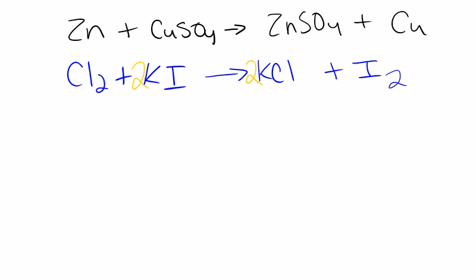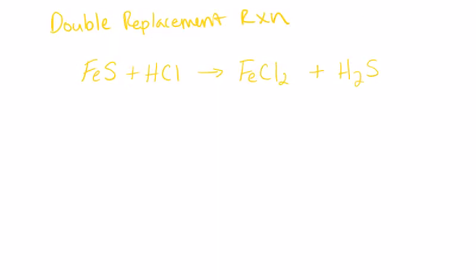Now we're going to move on to the double replacement reaction. A double replacement reaction and single replacement reaction are very similar, except in this case both cations and anions are being replaced — there's no free element. As you notice, in this equation there are 2 compounds as reactants. We recognize this as a double replacement equation because there are 2 compounds, and their products have completely switched places. It's like going to a date with your date and then leaving with someone else's date.